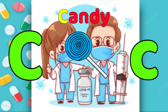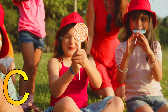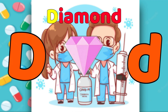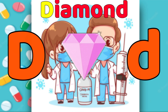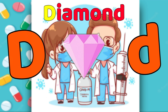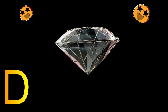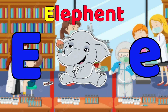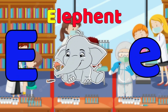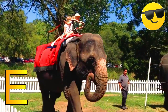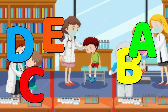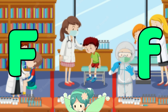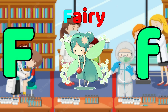C, Candy. C, Candy. D is for Diamond. D, Diamond. D, Diamond. D, Diamond. E is for Elephant. E, Elephant. E, Elephant. E, Elephant.